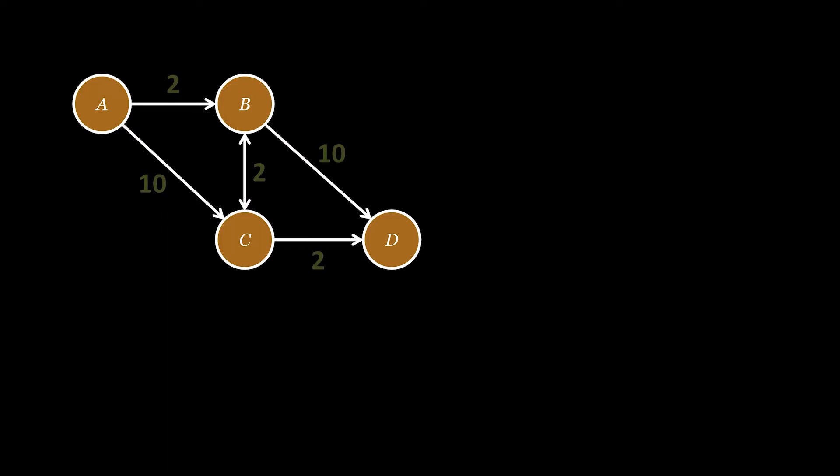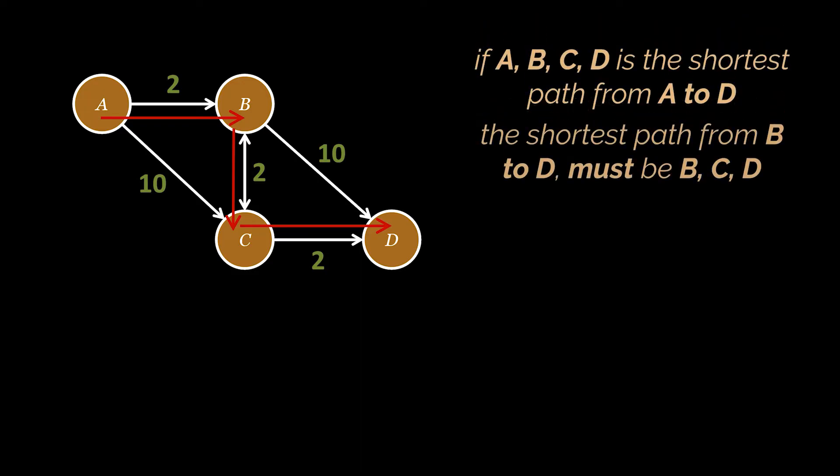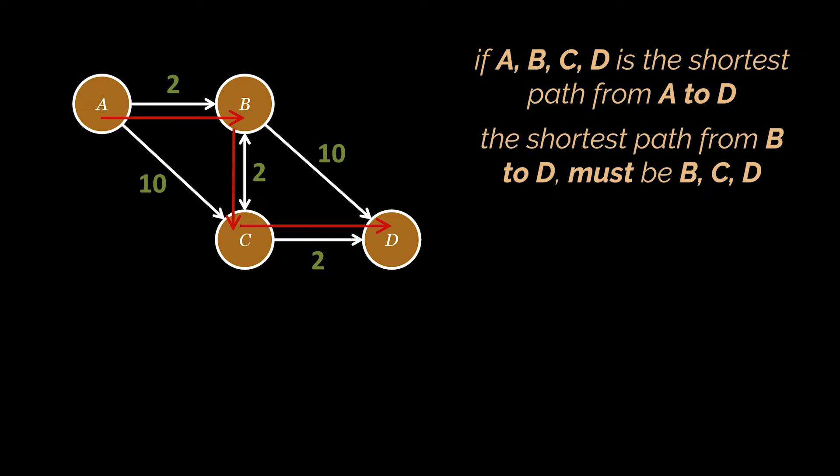Let's take this weighted directed graph as an example. We can clearly see that the shortest path from A to D is A, B, C, and then D. Now what Dijkstra tells us is that if A, B, C, D is the shortest path from A to D, then the shortest path from B to D must be B, C, D or the shortest path from A to C must be A, B, C.